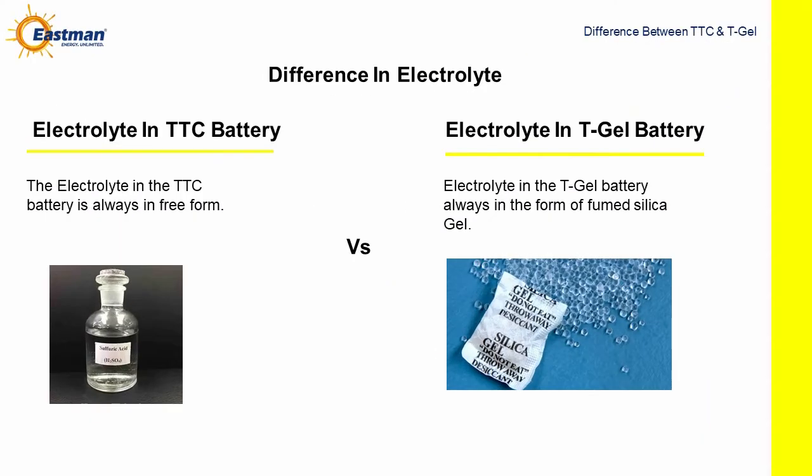Difference in electrolyte. The electrolyte in the TTC battery is always in free form. The electrolyte in the T-Gel battery is always in the form of fumed silica gel.